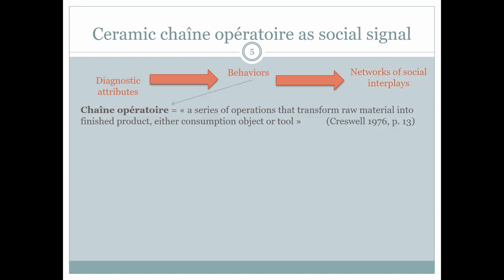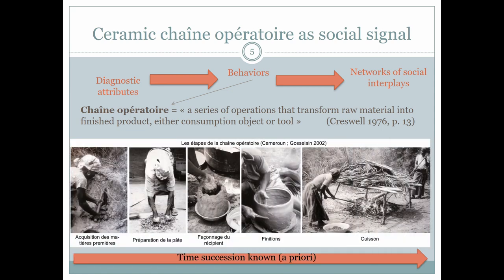Combinations of behaviors refer to a basic concept of technological analysis, which is the chain operatoire. It can define the whole manufacturing process or just a part of it. The main actions involved in ceramic manufacturing are: collecting and preparing the raw materials, fashioning the container, finishing and treating the surface, and firing the container.